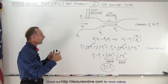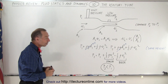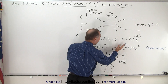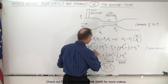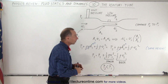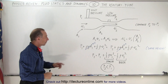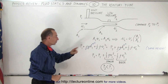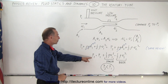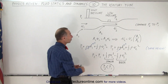Then we apply Bernoulli's equation. Right away we can eliminate the term that includes height, since the height of the tube doesn't change, and so we're left with the remainder of the equation. We can then solve for P2 in terms of P1, or P1 in terms of P2.